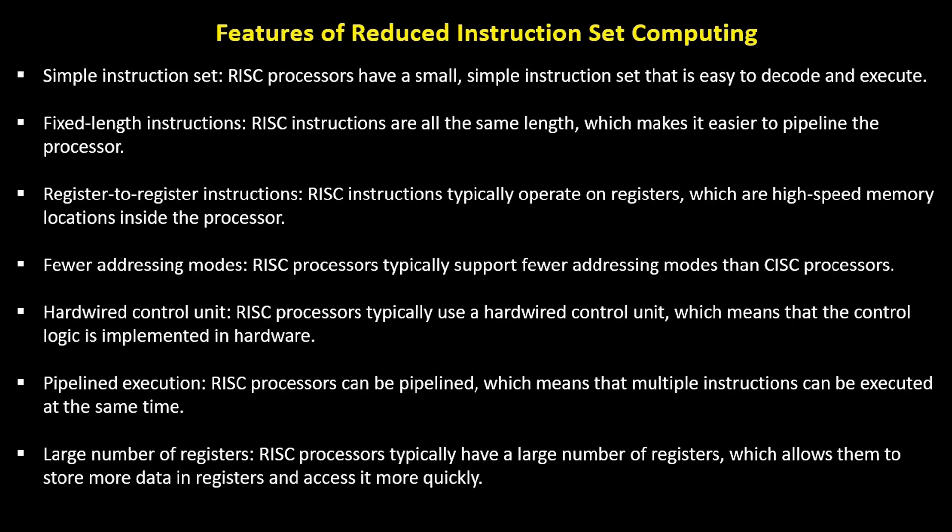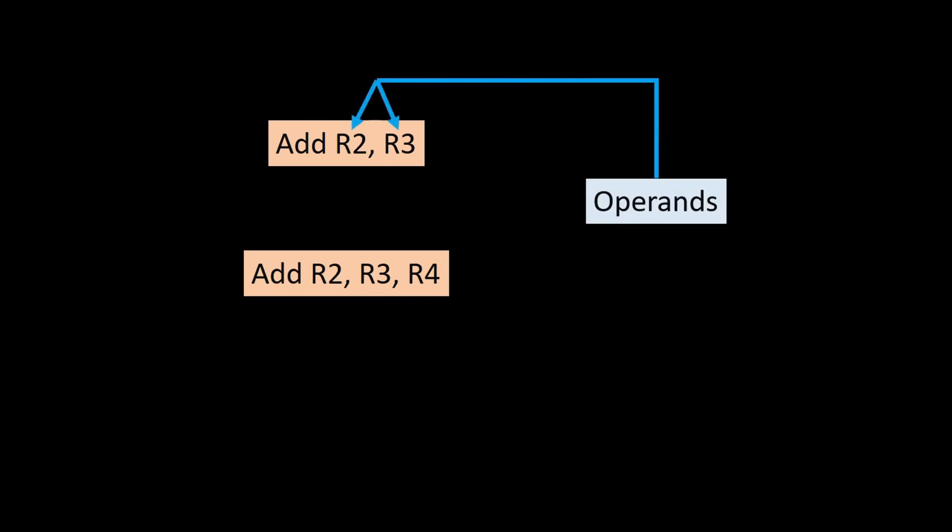Let's start with RISC instruction sets. RISC instructions are designed to be simple and have a fixed size, usually one memory word. Unlike other instruction sets, RISC instructions primarily operate on processor registers. Arithmetic and logic operations in RISC instructions can have operands stored in registers or provided directly within the instruction. Let's look at a couple of examples. In the first instruction, ADD R2, R3, the operands are stored in registers R2 and R3. Similarly, in the second instruction, ADD R2, R3, R4, the operands are in registers R2, R3, and R4. However, when a program starts executing, the operands are typically stored in memory. To access these memory operands, RISC instruction sets provide load and store instructions.